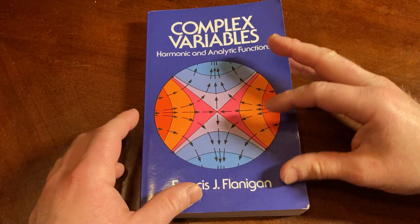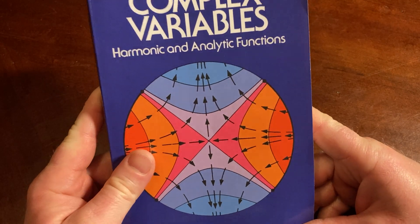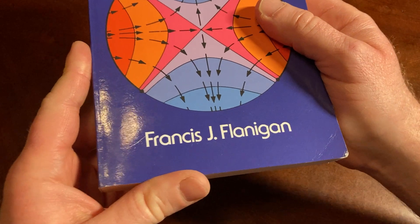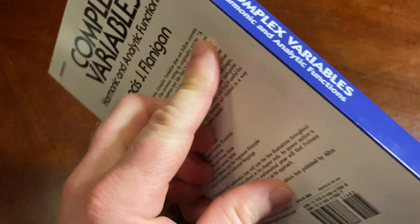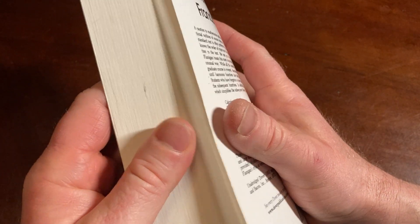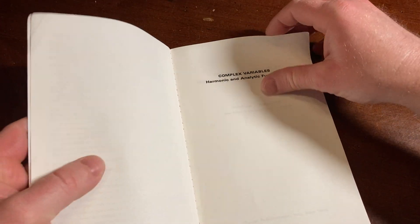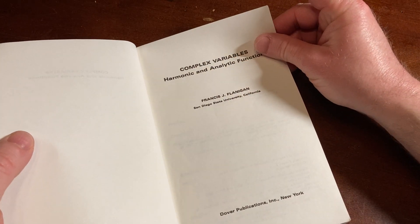This is a really great book on complex variables. It's called Complex Variables, Harmonic and Analytic Functions, and it was written by Francis J. Flanagan. It's a Dover book, which means this book was published a long time ago and then reprinted by this company called Dover, which reprints old books. Dover Publications, Inc., New York.